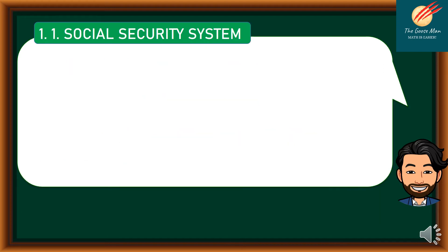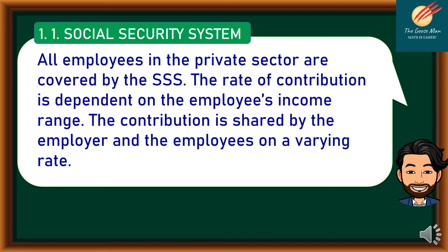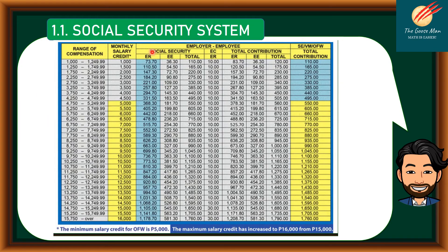The first deduction is the Social Security System (SSS). All employees in the private sector are covered by SSS. The rate of contribution is dependent on the employee's income range, and the contribution is shared by the employer and the employee at varying rates. In the SSS table, ER refers to the employer's share and EE refers to the employee's share.